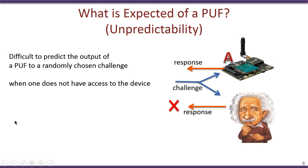Another important feature of a good PUF is unpredictability — the ability to produce a correct response for a challenge should require the physical presence of the device. If someone provides a challenge and obtains a response, you should be guaranteed that the response originated from that device and not from some algorithm or other technique. So the three key requirements for every PUF are uniqueness, reliability, and unpredictability. These properties are orthogonal to each other, and achieving all three in the same PUF is an extremely challenging problem that many researchers are working on.